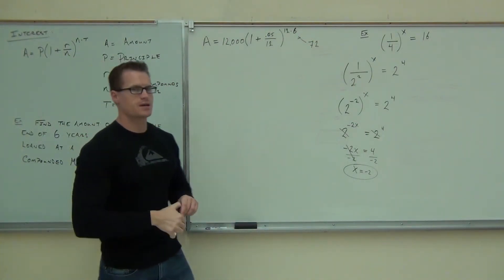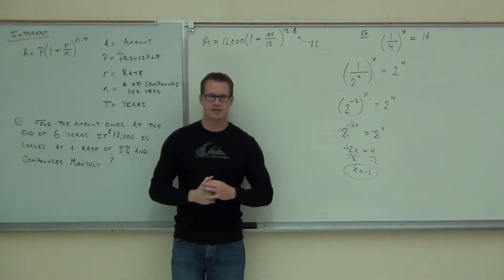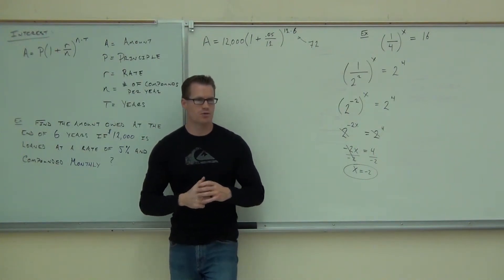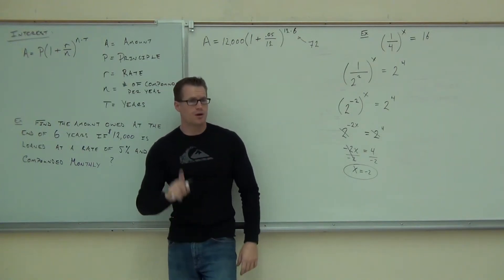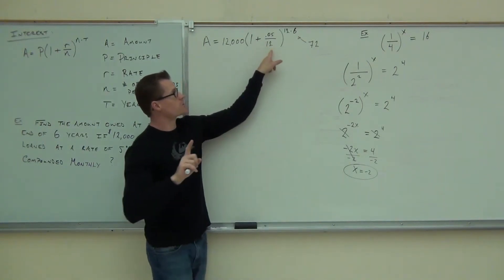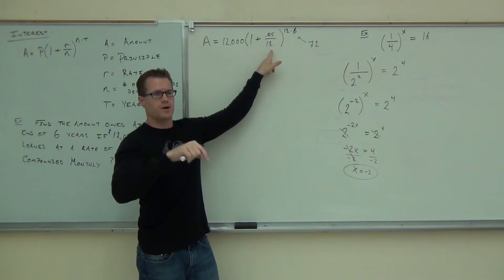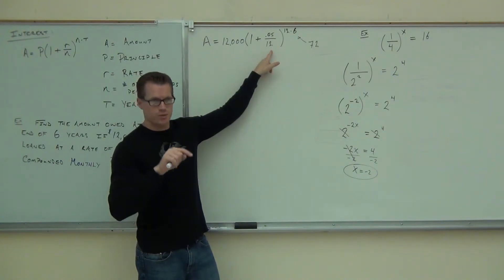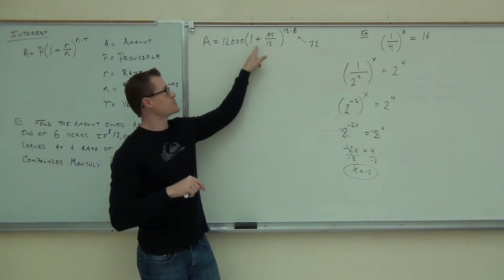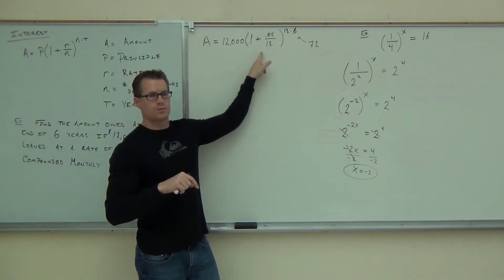Now, follow me carefully. Here's how you do this all in one step. Just listen to what I'm going to talk about. You're going to work from the inside out. We're going to do this a little bit different than how it's written. First thing you're going to do, you're going to do this one. So on your calculator, plug in .05. You got it? Divide by 12. Press equals. Add 1, so plus 1. That's you right here right now. Press equals.